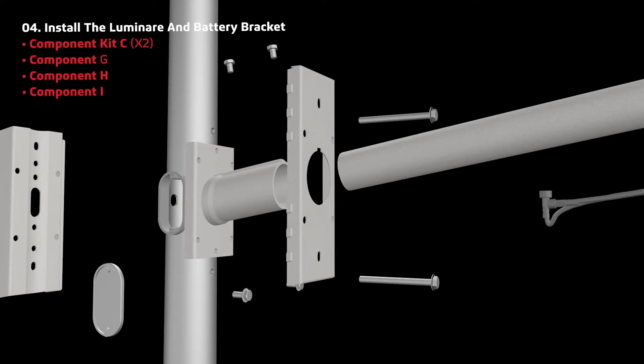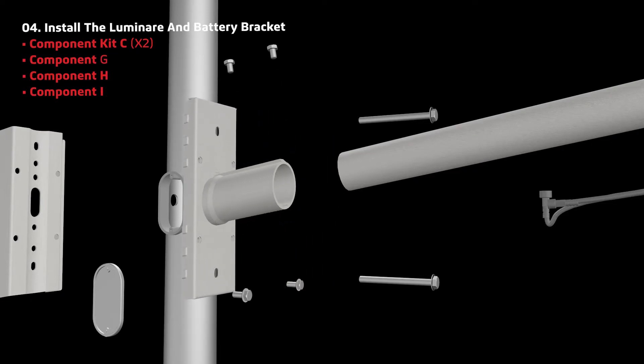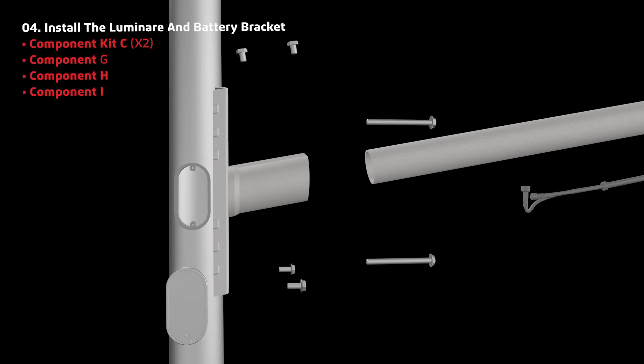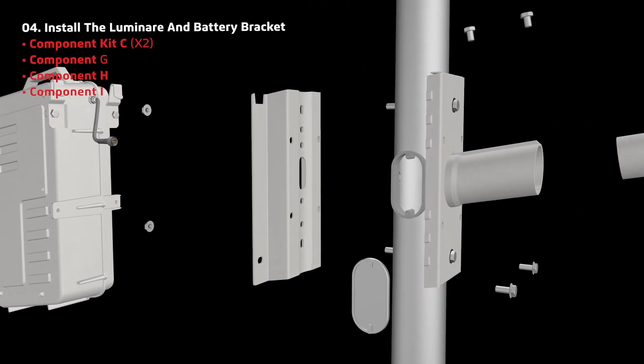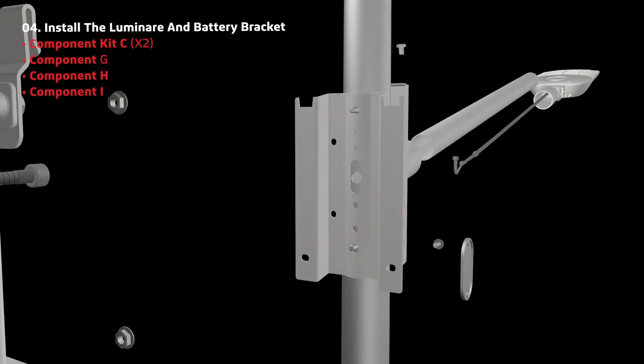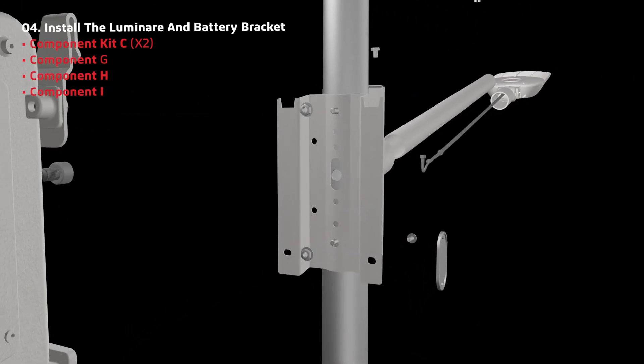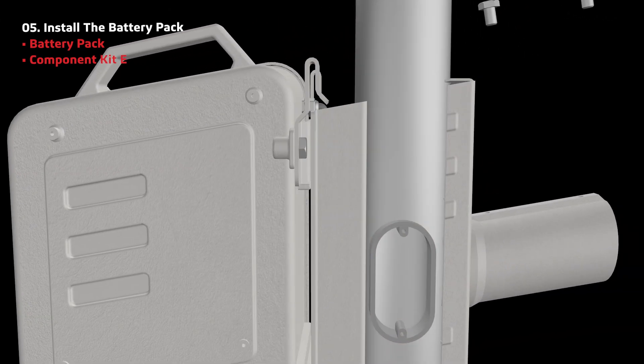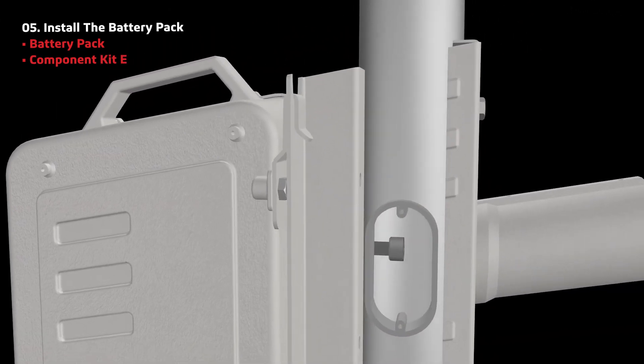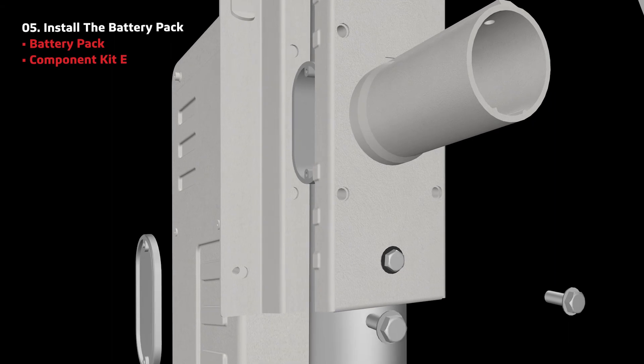Next, install the luminaire and battery bracket. Align component H to the holes on the pole, and then attach component I with the two long screws from component kit C. On the other side of the pole, align and attach component G. Secure and tighten the two long screws from component kit C, then hang the battery pack and secure with screws from component kit E.